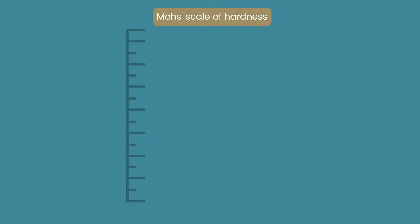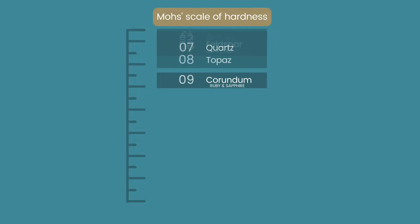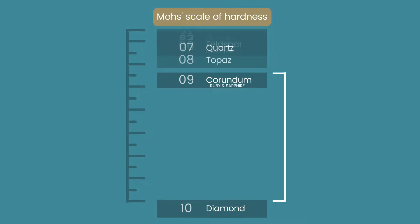There are actually varying distances in hardness between each one. You'll notice there is a greater difference between 9 and 10 — which is ruby, sapphire, and diamond — than between 1 and 9.